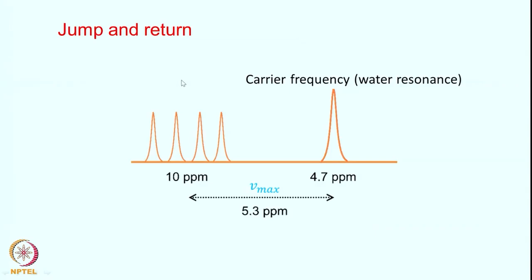Another commonly used technique is called the jump and return sequence. The idea is as follows: you have a strong water signal at around 4.7 ppm. If you are recording spectra in water, the water typically appears around 4.7 to 4.8 ppm, and you have many other signals further away, for example around 10 ppm. We are interested in those resonances and not ones close to water.